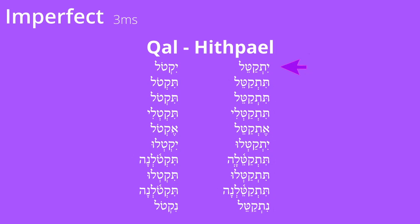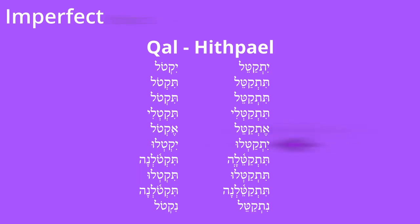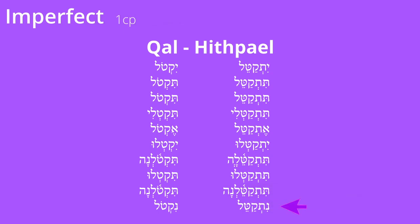Note the difference in the Qal imperfect versus the Hithpael imperfect: Yiktol / Yitkatel; Tiktol / Titkatel; Tiktol / Titkatel; Yiktol / Titkatel; Tiktol; Yiktol / Tiktol / Tiktol / Tiktol / Titkatel / Tiktol / Yiktol / Tiktol / Tiktol / Tiktol.